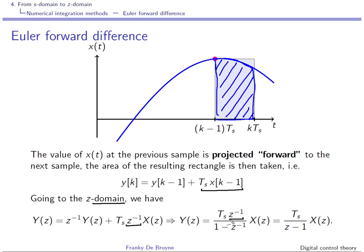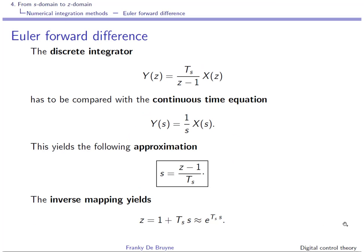This Z⁻¹ appears in the transfer function. In terms of Z⁻¹ this is the transfer function, and multiplying numerator and denominator by Z we work in the variable Z. Using this Euler forward difference approximation method, we equate the two equations and find a relation between S and Z. The relation is: to take your transfer function in S and replace S by (Z−1)/Ts to obtain a discrete-time approximation according to the Euler forward method.